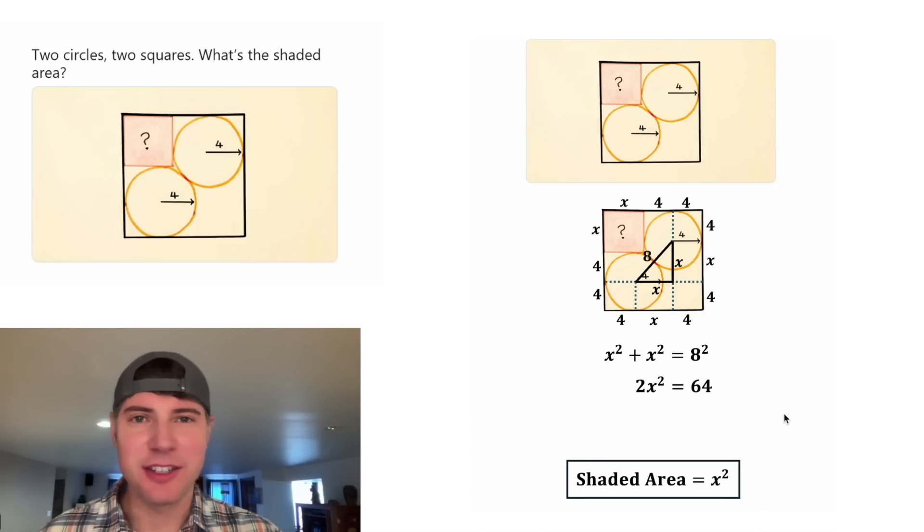X squared plus X squared is two X squared, and eight squared is equal to 64. And after we divide both sides by two, we get X squared is equal to 32. And X squared is what we're trying to solve for.